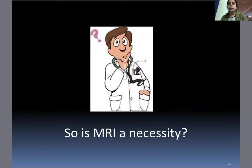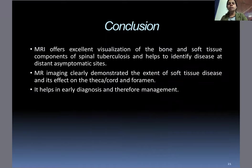So, is MRI a necessity? Conclusion: MRI offers excellent visualization of the bone and soft tissue components of the spine in TB, and helps to identify disease at distant asymptomatic sites. These images clearly demonstrate the extent of soft tissue involvement and its effect on the thecal sac, spinal cord, or nerve roots. It helps in early diagnosis and therefore management.